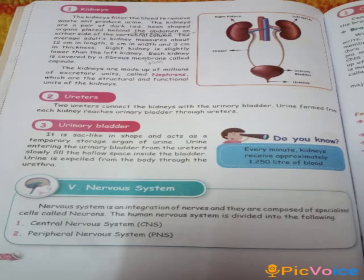The excretory system consists of the following: kidneys, urinary bladder, lungs, liver and skin. The excretory system is specific in its function.